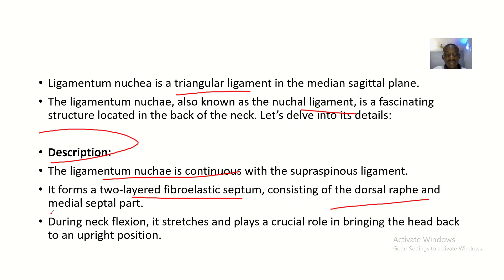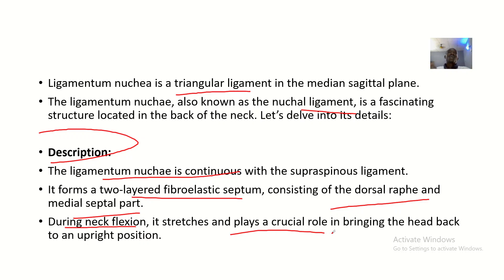It forms a two-layer fibroelastic septum consisting of the dorsal rift and the medial septal parts. During flexion of the neck it stretches and plays a crucial role in bringing the neck back. When you flex the neck, what is actually stopping the neck from hyperflexion is the ligamentum nuchae.